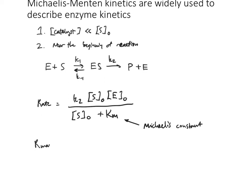So I also pointed out that the maximum rate is right there at the beginning of the reaction. It's also often called Vmax in some textbooks. And it happens to equal that second rate constant times the starting concentration of the enzyme. And this rate constant, K2, is often called the turnover number.